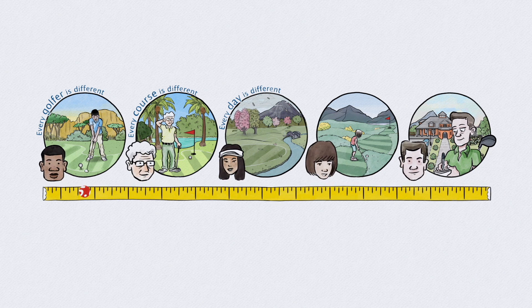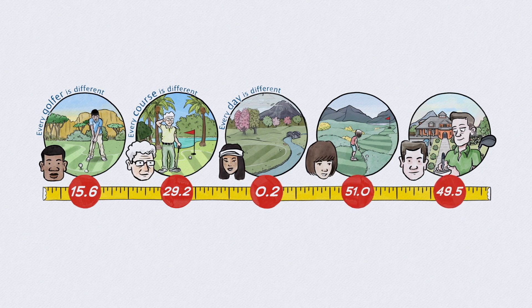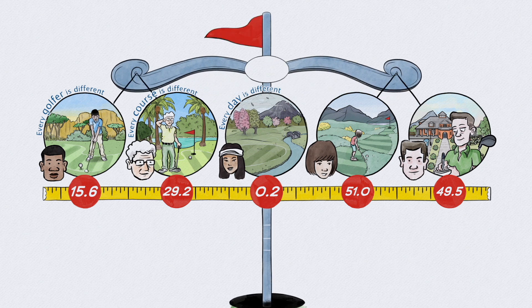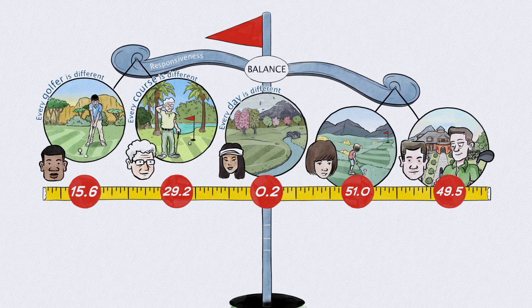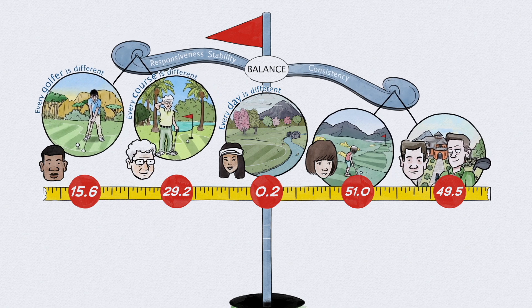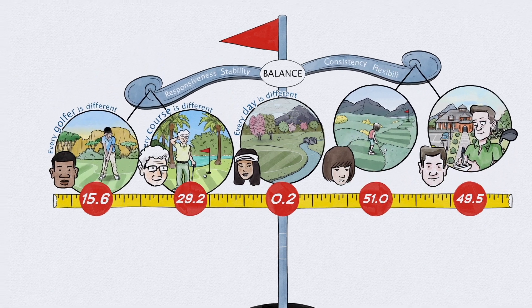A handicap index, reflecting the score a player can achieve when playing well. To do that, it must start with a handicap calculation which balances responsiveness and stability, consistency and flexibility.